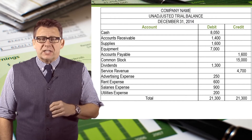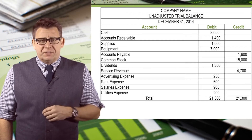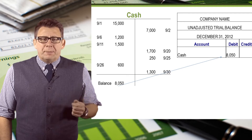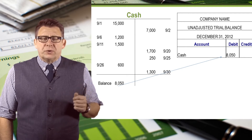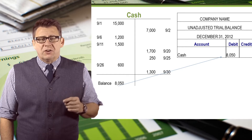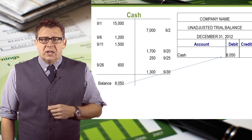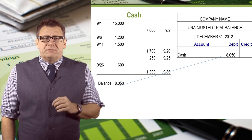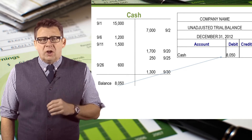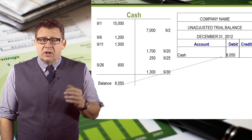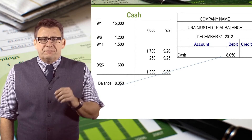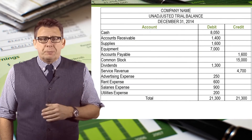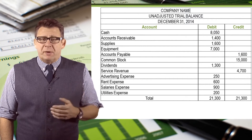Let's look at the details as to how we arrived at these balances. In this example, all of the debits totaled $18,300 and all of the credits totaled $10,250. Therefore, the cash account has a debit balance of $8,050. So on the trial balance, we would enter cash as the first account and $8,050 in the debit column.